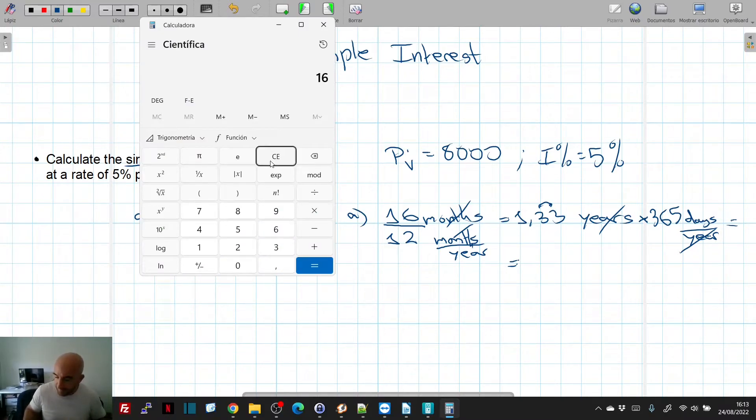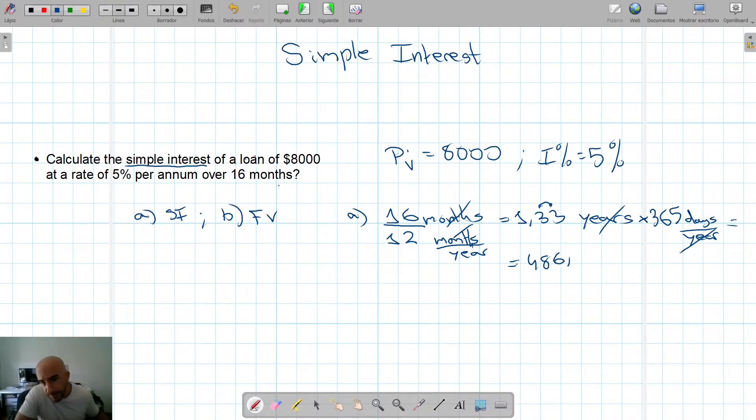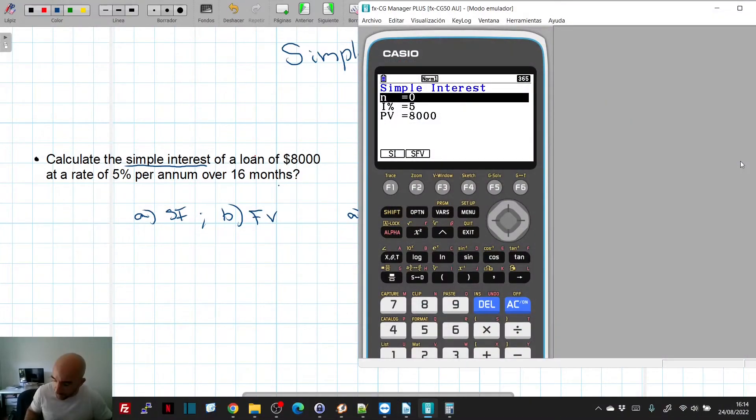And then we obtain here. So we get 16 divided by 12, multiplied by 365, which is 486.666. We can leave that as 486.67. But another trick I will show you in the calculator is we can put here 16 times 365 divided by 12. And it's the calculator that can calculate those numbers.